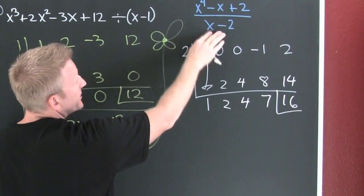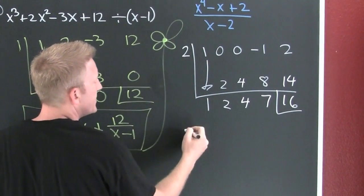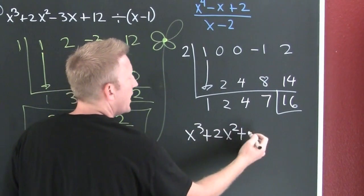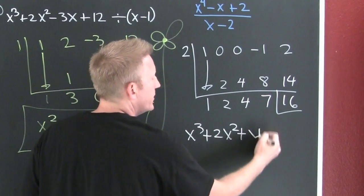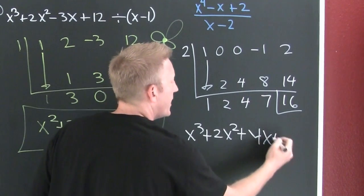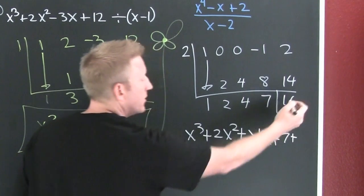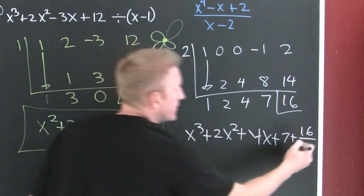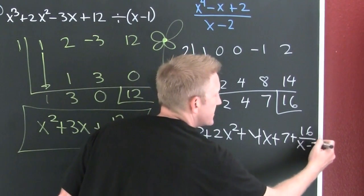I'm dividing by a linear factor, I need to take it down a notch. This is x to the 3rd plus 2x squared plus 4x plus 7 plus remainder 16 over divisor x minus 2.